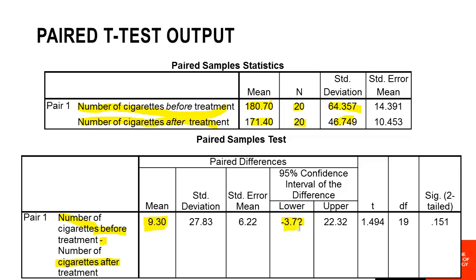We have our average difference, which we'll need when we write our report. We also have a confidence interval for the difference — here we can see one negative and one positive value, telling us that on average people who underwent this hypnosis will be smoking between 3.7 cigarettes more and 22 cigarettes less after treatment. The really important figure is our p-value: 0.151. We look for p-values less than 0.05, and 0.151 is not less than 0.05 — so it's not significant. Even though there was a difference, this difference wasn't a significant difference.